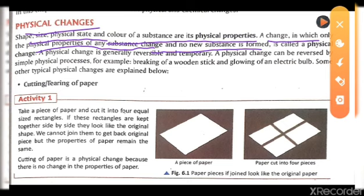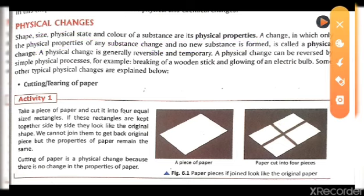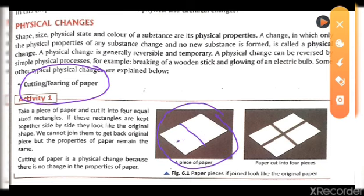The change is only temporary and the substance can be reversed back to its original shape, size, or property. In most cases physical changes are reversible, though there are some rare cases where they cannot be reversed. For example, cutting or tearing of paper — we have just torn up the paper, and while it looks similar, it is not the original.